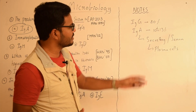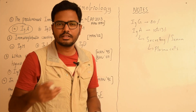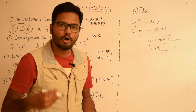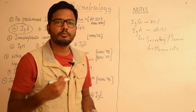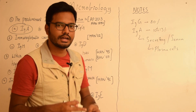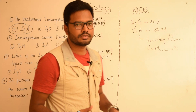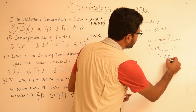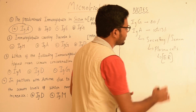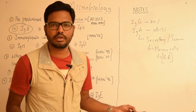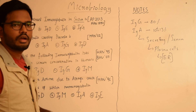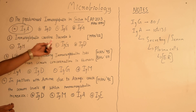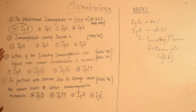Any immunoglobulin is synthesized by plasma cells, and within the plasma cell, the endoplasmic reticulum is the organelle where immunoglobulin synthesis occurs — that's an important MCQ point. Moving on to the next question: which immunoglobulin crosses the placenta? The options are IgM, IgA, IgG, and IgD.